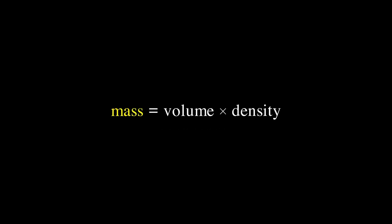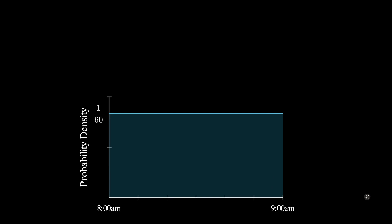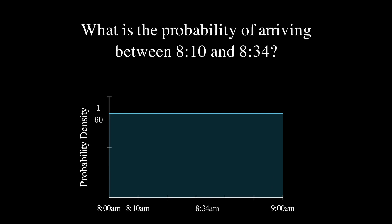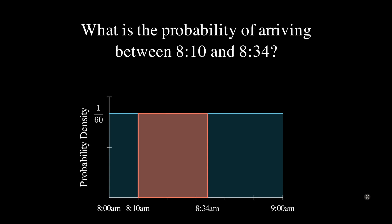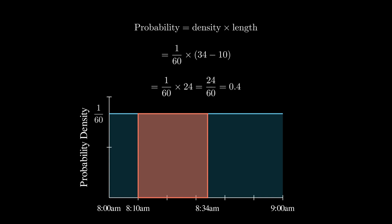Mass is volume times density, and mass here is probability. The volume is the length of an interval — it's the one-dimensional volume. We know that the probability of the bus arriving in the whole interval is 1, so the density is 1 over the length of the interval. Our interval is 60 minutes long, so our density is 1/60. So if you asked what is the probability of arriving between 8:10 and 8:34, we simply find the probability by taking the density times the length: density is 1/60, the length of that interval is 24, so the probability is 24/60, or 40%.